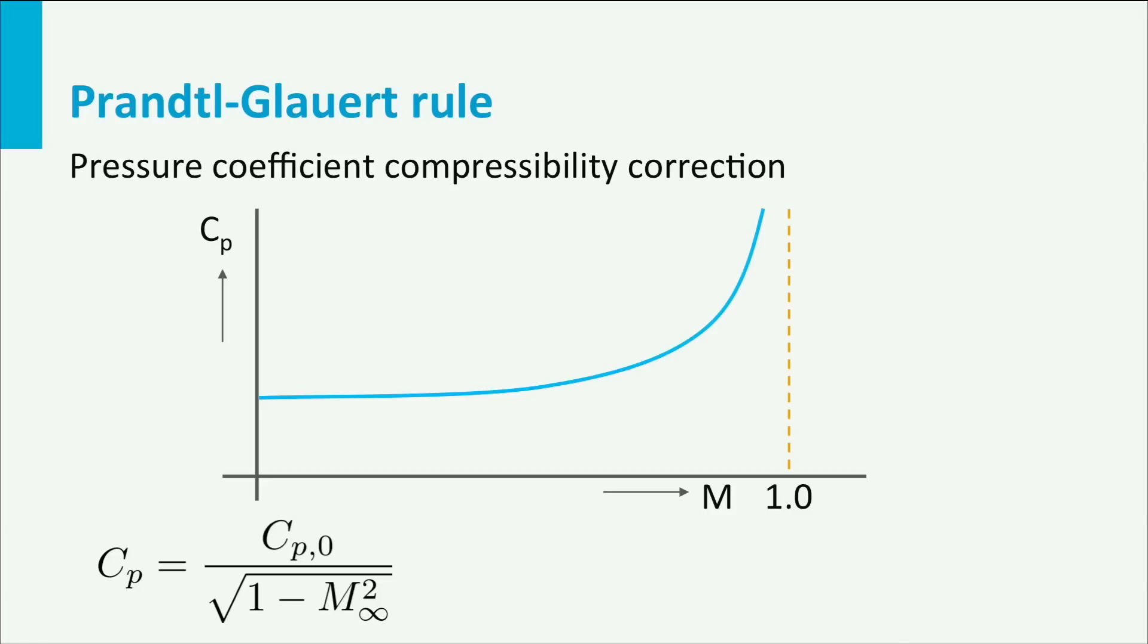Without going into much detail, the effect of compressibility is incorporated using this expression for the pressure coefficient. Cp is Cp0 divided by the square root of 1 minus m squared. Cp0 is the incompressible pressure coefficient.